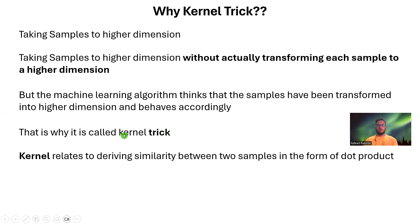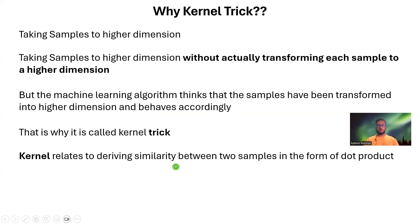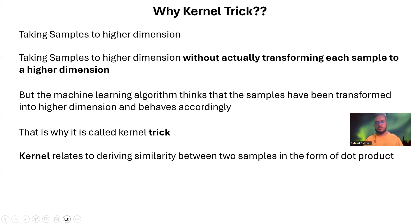This is why it is called kernel trick — because it's tweaking the model in a way. It is called 'kernel' because it is related to deriving similarity measures between two samples in the form of a dot product. When we discuss the technical aspects, I will show you why I'm talking about dot product here.